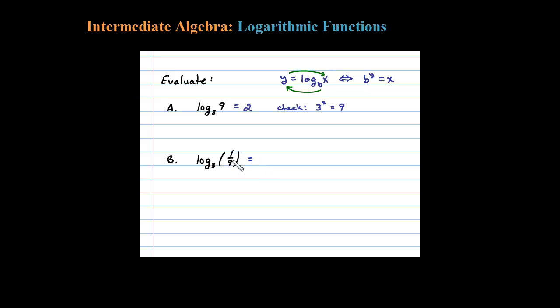one ninth? Notice here 9 is some power of 3, namely 3 squared is 9, but it's in the denominator. Since it's in the denominator, it looks like we're going to have a negative exponent. So let's try negative 2.